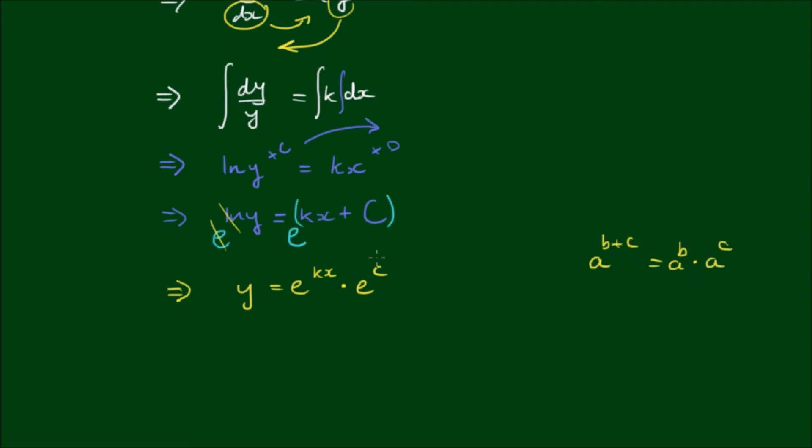And finally this e to the c here, because c is a constant and e is a special constant as well, a constant raised to the constant is still a constant. So let's just say that capital A is equal to e to the c just for a bit of convenience. So we write then the general solution would be y equals A times e to the kx.